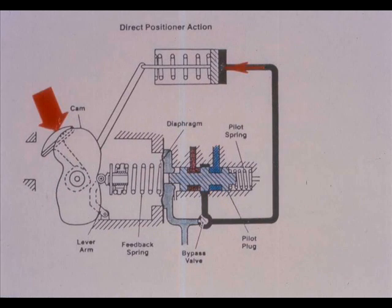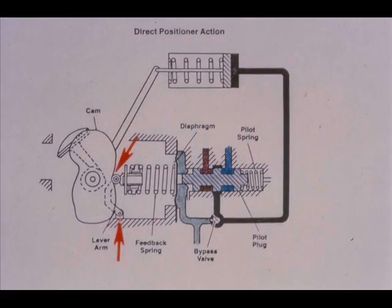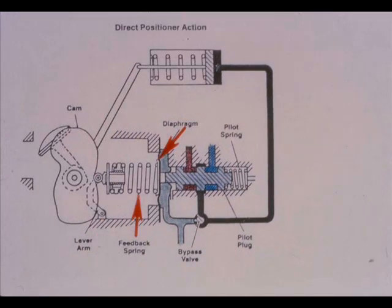The increasing pressure to the actuator moves the valve plug. The actuator and valve plug movement causes the cam to rotate. The lever arm is pivoted at one end and the cam follower end rides on the cam as it rotates. The cam transmits the valve plug movement through the cam follower to the feedback spring, compressing the spring. The valve plug continues to move until the feedback spring force balances the force of the instrument signal on the diaphragm.